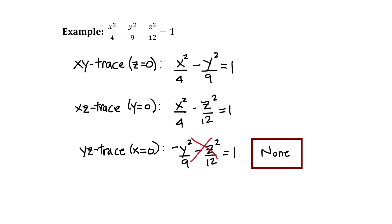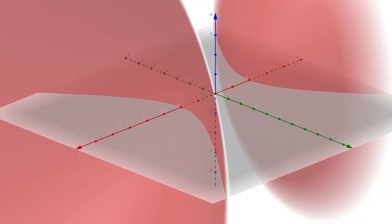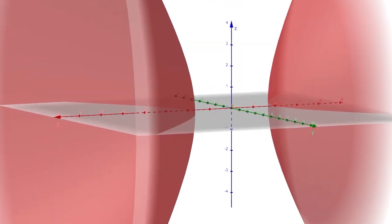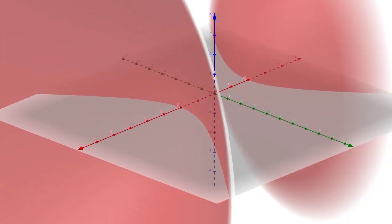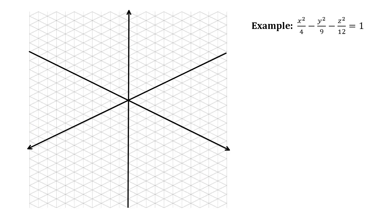Since x is the positive variable, the surface opens along the x-axis with a gap in the middle. Graphing this in GeoGebra confirms it is indeed a hyperboloid of two sheets opening along the x-axis.